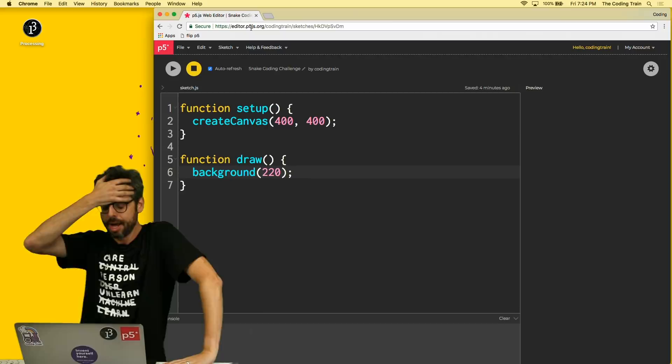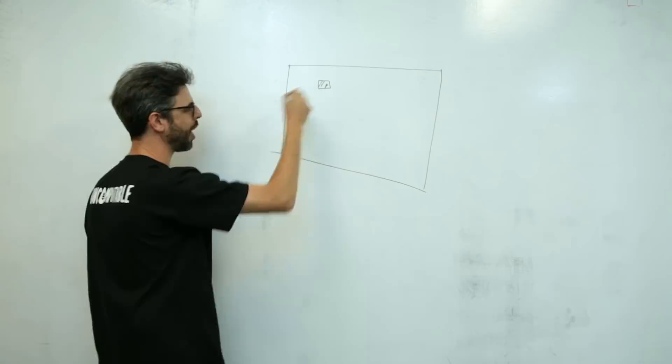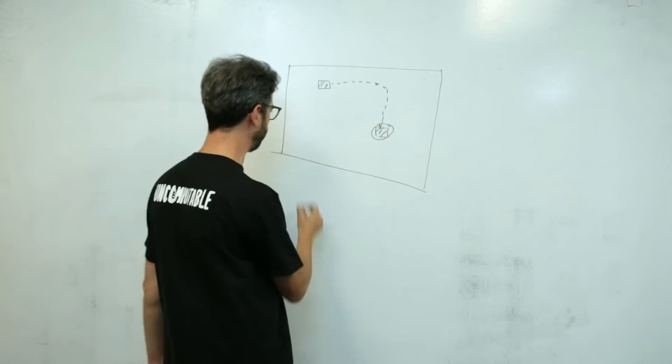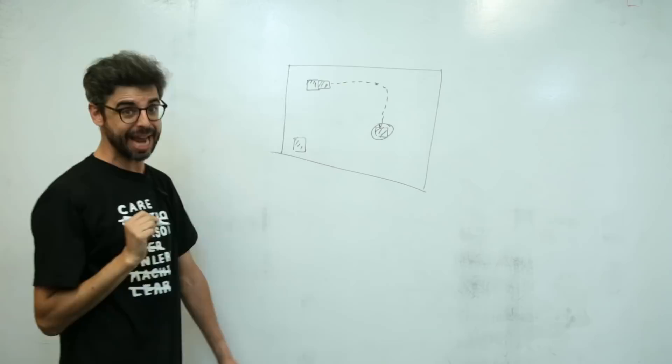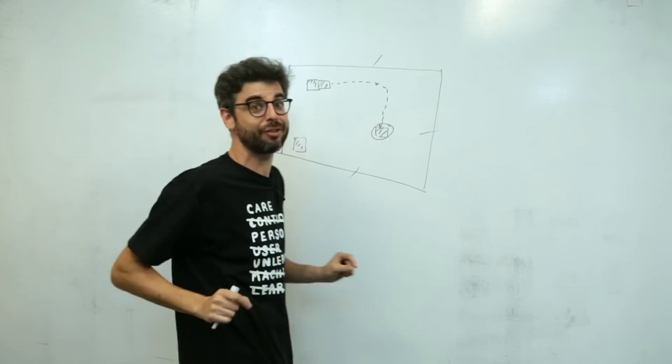The snake game: there is a canvas, you are a dot or a little square on that canvas. Another dot appears — a piece of food — and you move to grab it. Once you grab it, a new piece of food appears and your tail gets longer. If you hit the edge or run into your own body, the game is over. It gets much harder as your body grows longer.